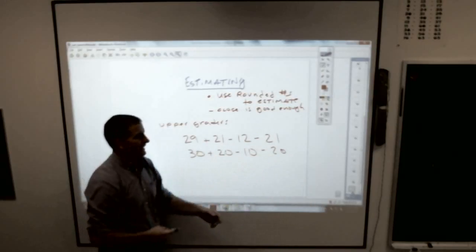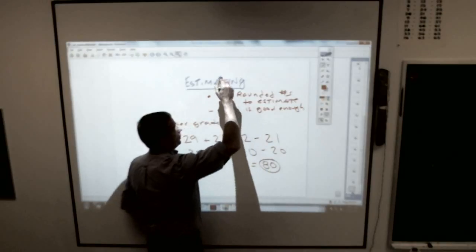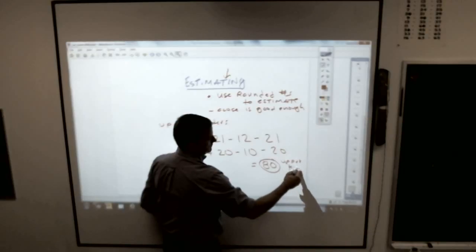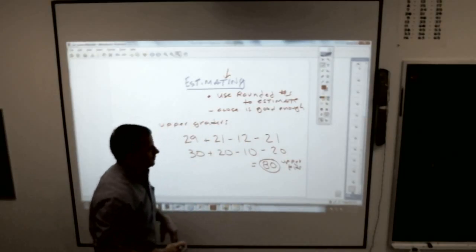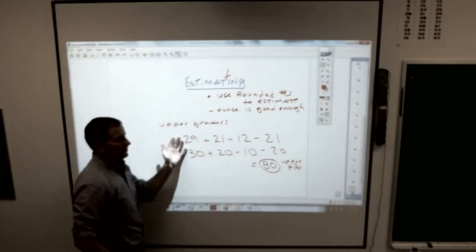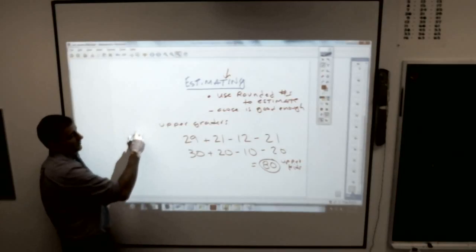What is that? 80. 80 would be our estimated number for upper grade kids. Maybe you're doing that because you're buying the whole upper grade lollipops or popsicles or something. You don't need to know exact numbers because they come in boxes.